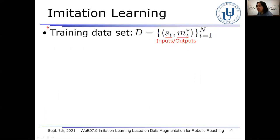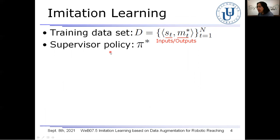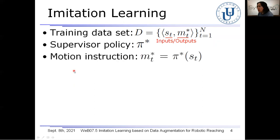For imitation learning, first off, a supervisor instructs the robot to reach the hand toward a target object. At the same time, the robot registers the sensor inputs and motion outputs instructed by the supervisor. These are used in the training dataset D. In this regard, the supervisor's policy is assumed to be optimal. So the robot is instructed to optimally reach the hand toward an object for the sensor input ST by the supervisor.